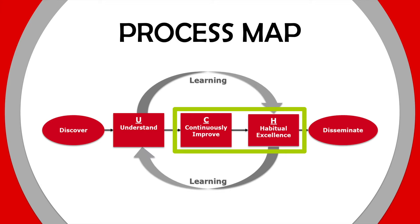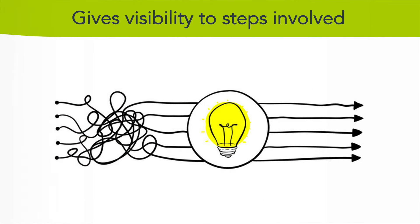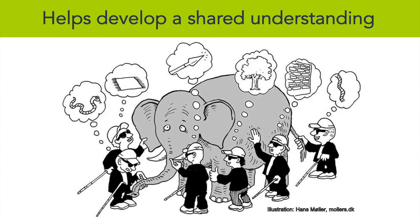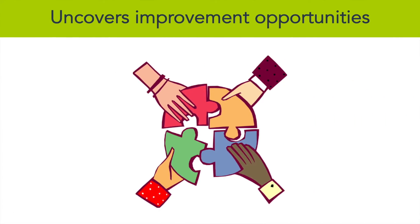There are many advantages of using a process map. It gives visibility to different steps involved in a process. It helps the team develop a shared understanding of how the process works, since everyone sees the system differently. It helps show how one thing affects other interdependent parts, and it can also help uncover improvement opportunities.